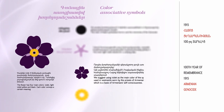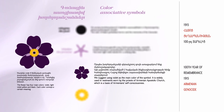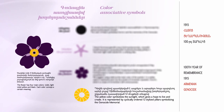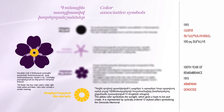We suggest using violet as the dominant color of the symbol. It is widely used in vestments worn by the priests of the Armenian Apostolic Church, which is the basis of Armenian self-consciousness — the future. The color yellow symbolizes the sunlight, which gives hope to live and create. It is represented by cyclically ordered twelve stylized pillars symbolizing the genocide memorial — eternity.